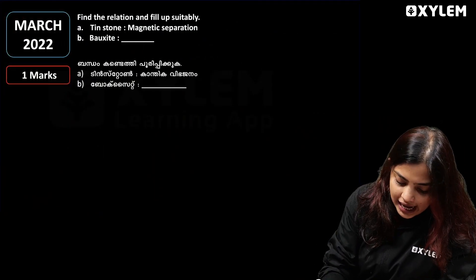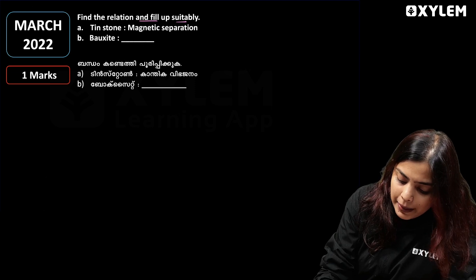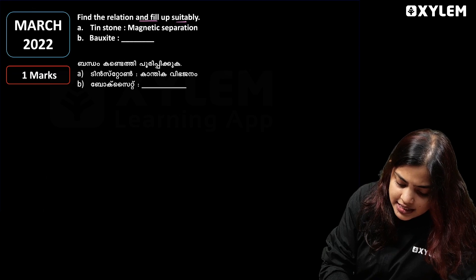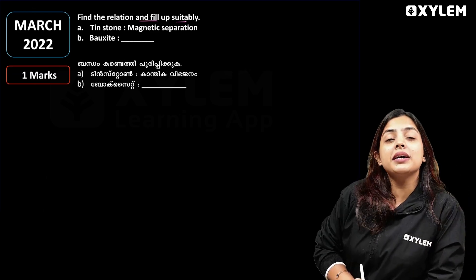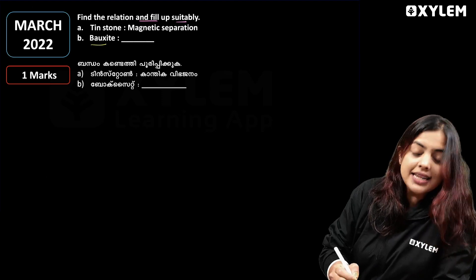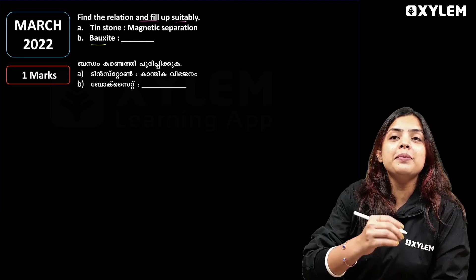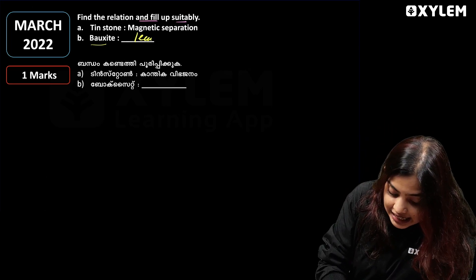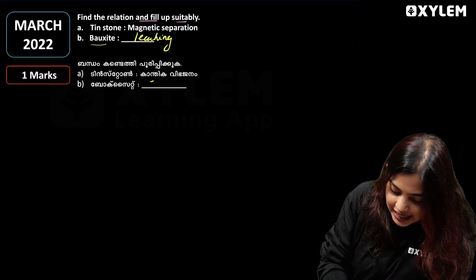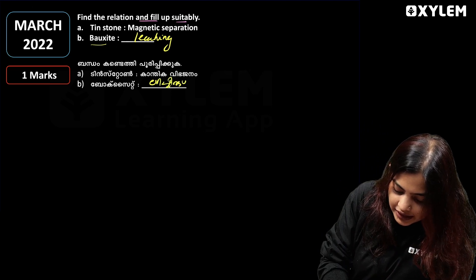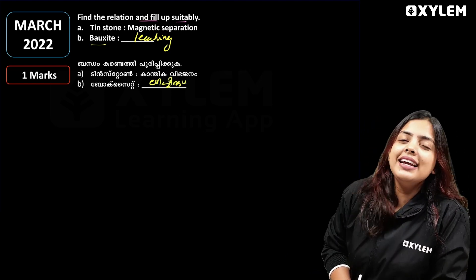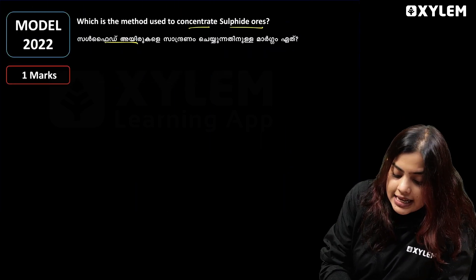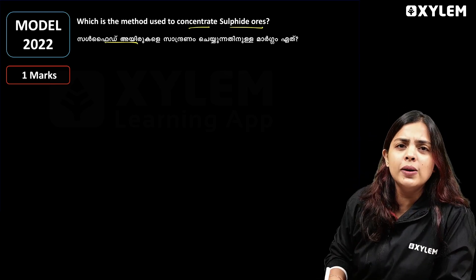First question: find the relation and fill up suitably. We have tin stone with magnetic separation. We should discuss the boxes about bauxite. How do we concentrate using leaching? We need to concentrate all the leaching.